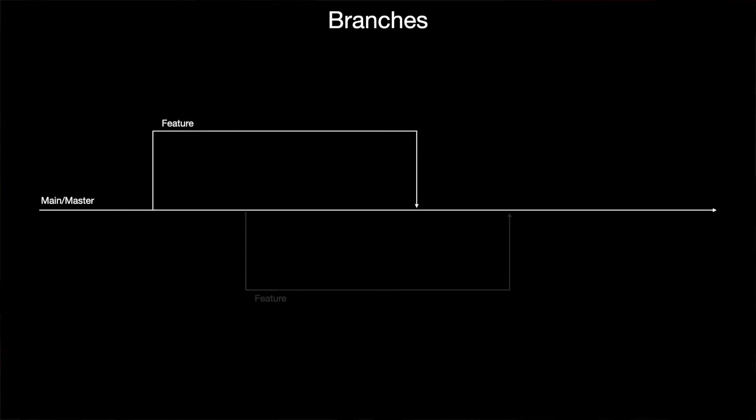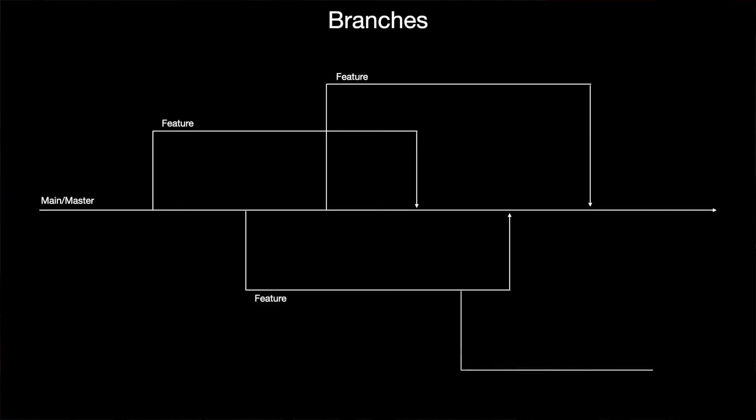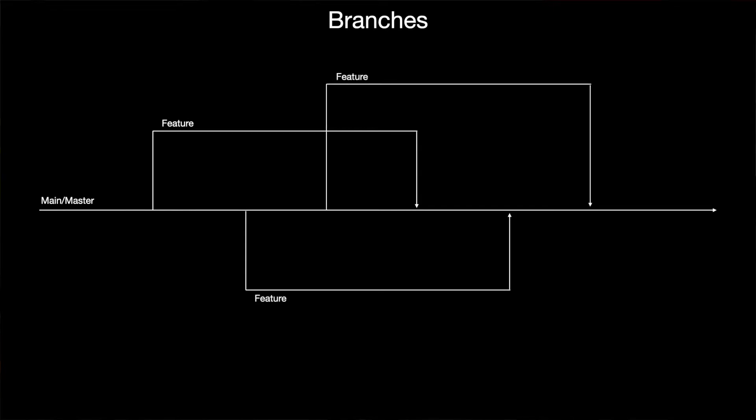Off of this branch you will have additional branches creating a tree structure, and these will be individual features that you're working on for your code. What's particularly nice about Git is that you can have branches off of branches, and these can be experiments with different features. You can even abandon these experiments later without affecting the main version of your code — it will save all of these different versions concurrently, so at any stage you can go back to what you already had. This whole collection of branches is referred to as the repository: a collection of branches and different commits that contain all of your code over time.